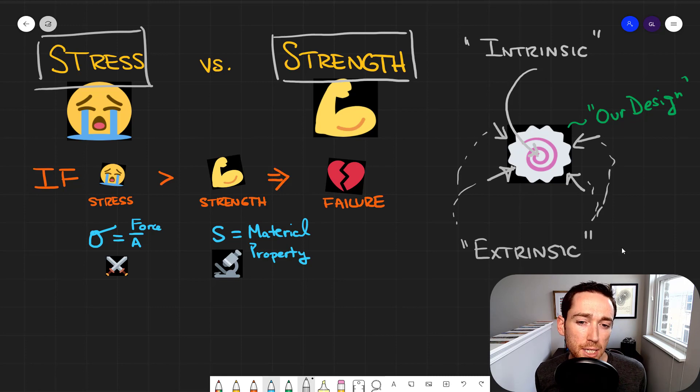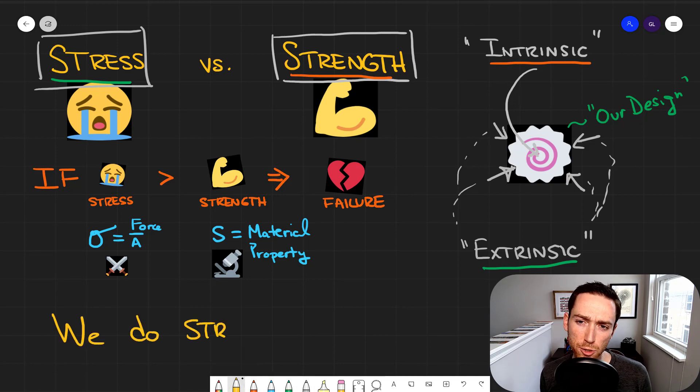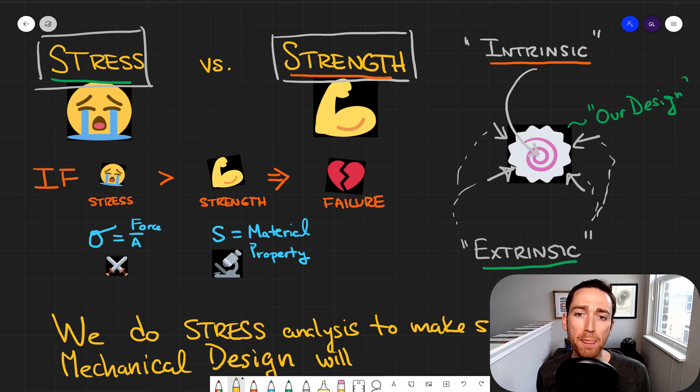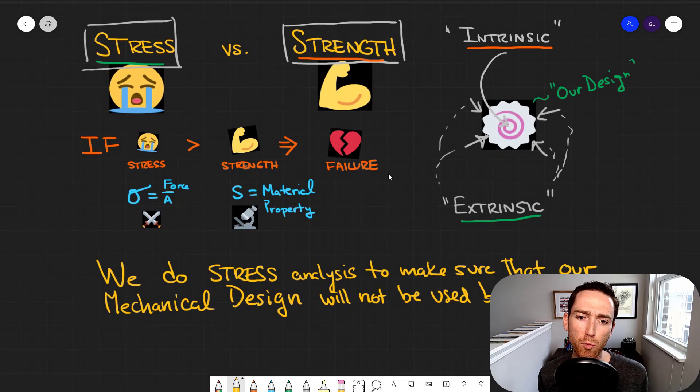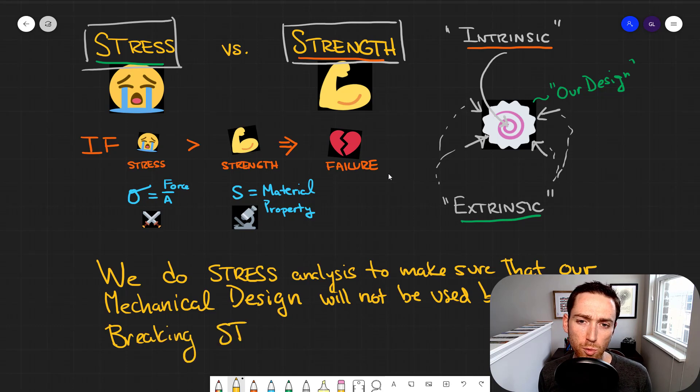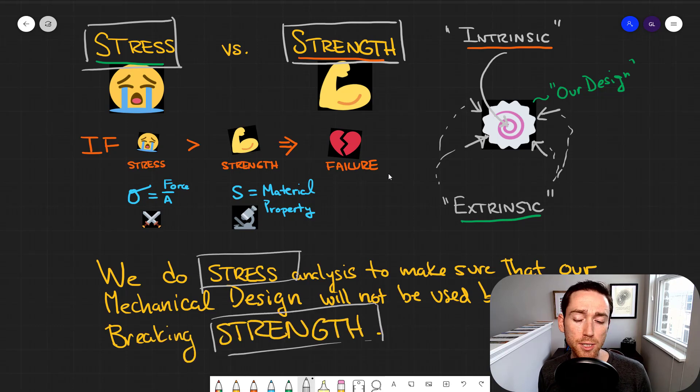That material property that's intrinsic to our part that's putting up with those forces and with those stress states has to fight back against those forces and those stress states. That is really the essence of what we want out of our designs. We want strong parts that will fight back, so no matter what stress state they get through, they will not break.